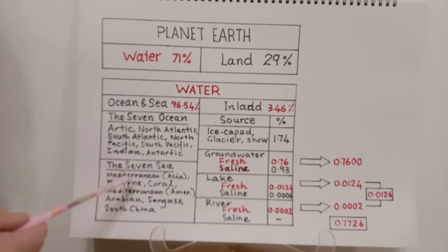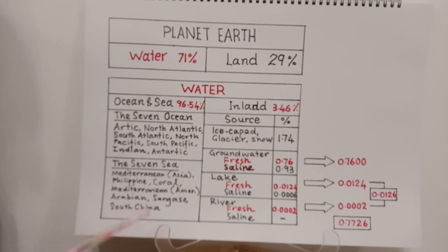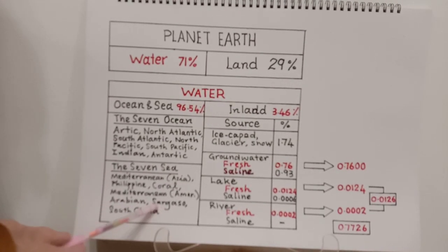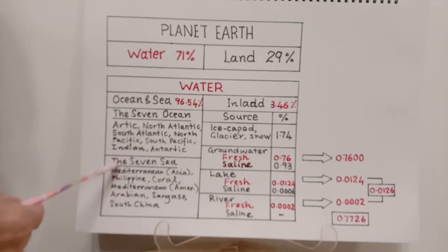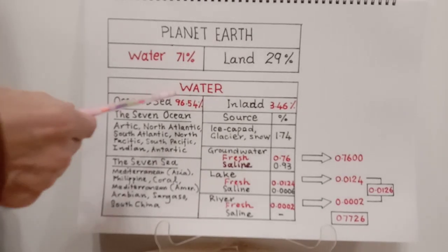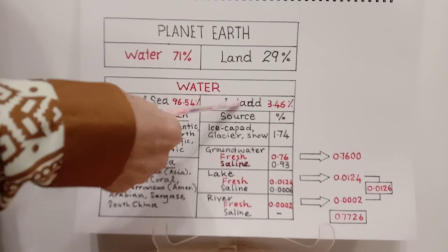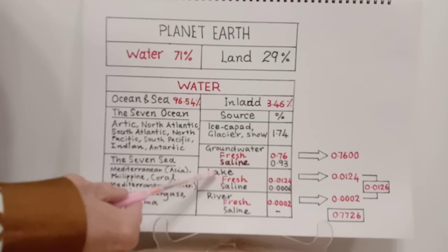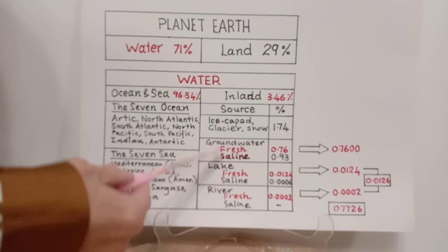The seven largest seas are the Mediterranean, the Philippine Sea, the Coral Sea, the Arabian Sea, the Sargasso Sea, and the South China Sea. Together, oceans and seas contribute 96.54% of the total water of our world.